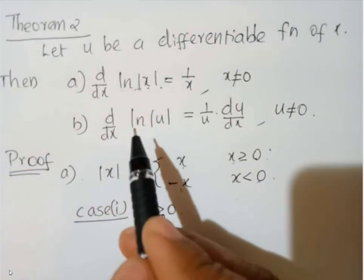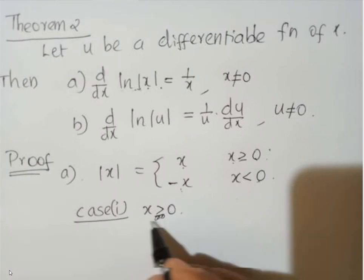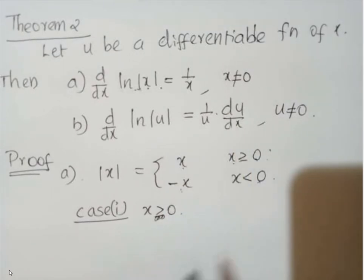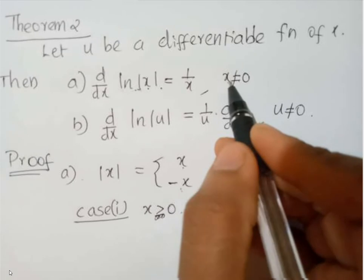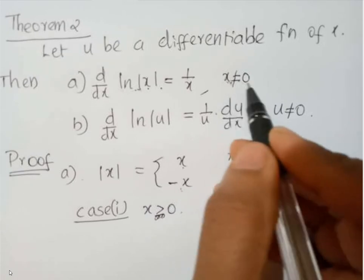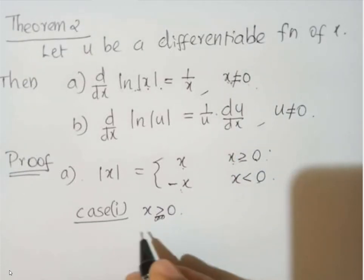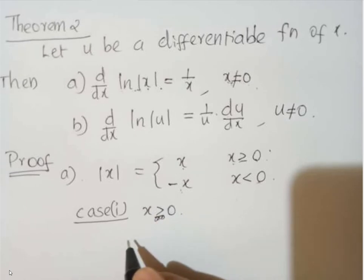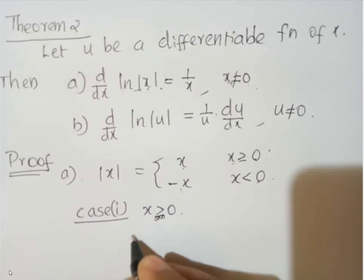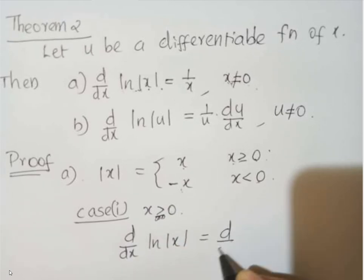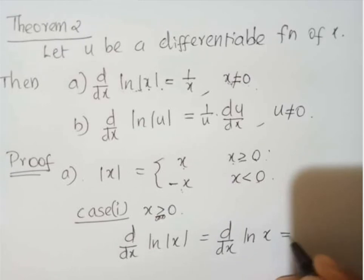So, why? That's why it is here denoted as x not equal to 0. So, first case is x greater than 0. Then, derivative of d by dx of ln |x| is equal to d by dx of ln x which you know that this is 1 by x. Okay?